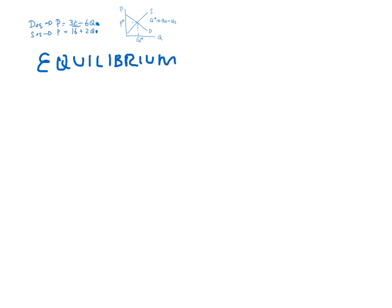So we set demand equal to supply. So we've got 32 minus 6Q equals 16 plus 2Q. And we simply solve this equation.